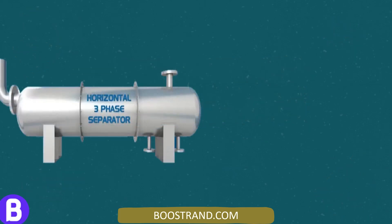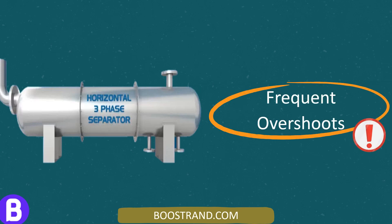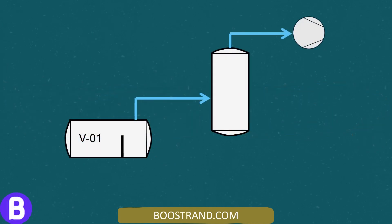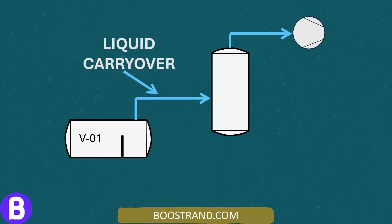In a three-phase separator at a crude oil production facility, operators started to notice that there were frequent overshoots in the level reading. In addition, as the gas is sent to a compression system, it was noticed that the downstream compressor suction scrubber started to receive more liquids than usual.